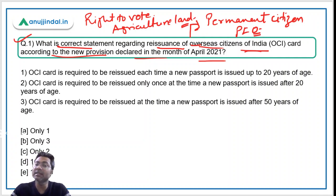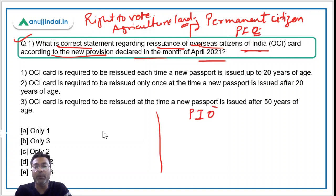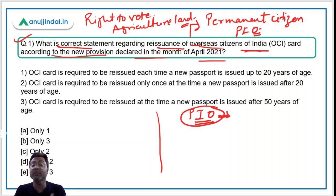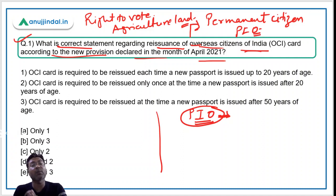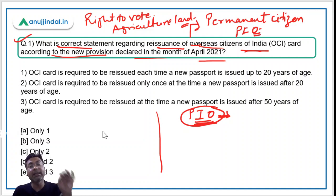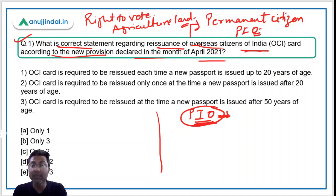There is another kind — PIO, or Persons of Indian Origin. PIOs are those persons who at any time held an Indian passport, or whose parents, grandparents, or great-grandparents were citizens of India under the Citizenship Amendment Act of 1955.